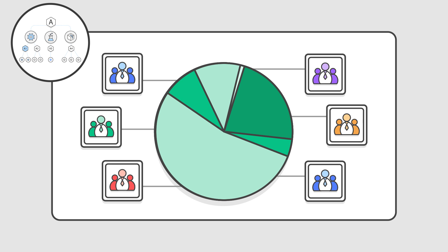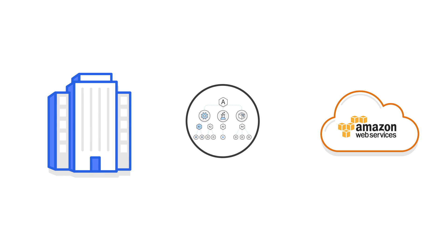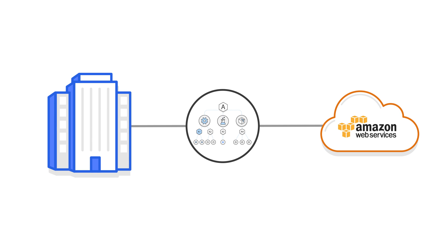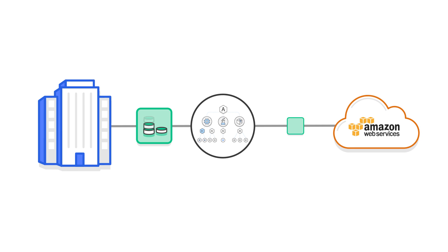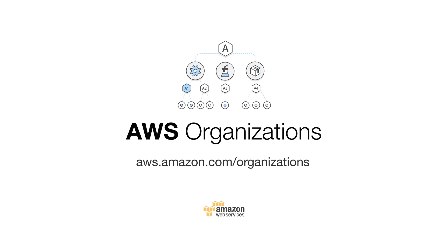Using Organizations, you can set up a single payment method for all of these accounts through consolidated billing. AWS Organizations is available to all AWS customers at no additional charge. Get started and learn more about Organizations at aws.amazon.com/organizations.